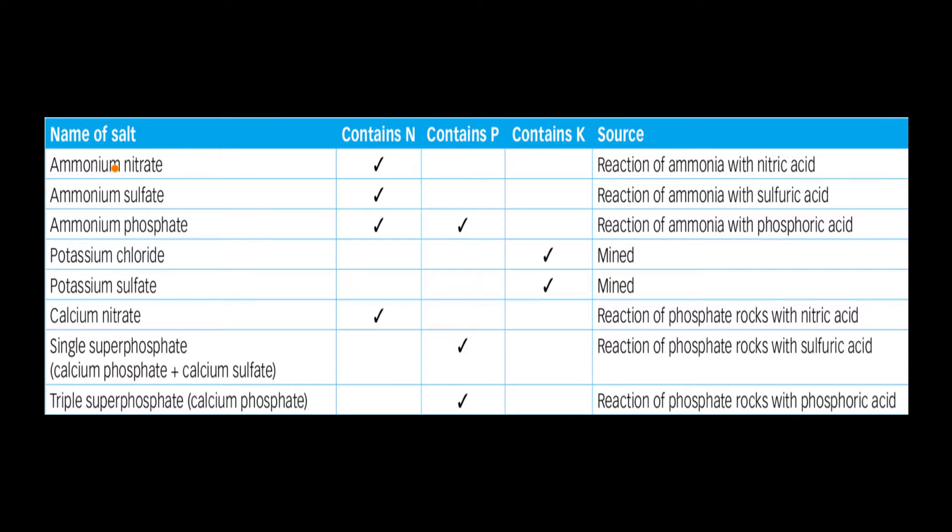So first one, ammonium nitrate. You see that it contains nitrogen. That's produced by the reaction of ammonia with nitric acid. By the way, all of these reactions we're going to go through in the upcoming slides. But I just want you to be aware of all the different salts. So you've got ammonium nitrate, ammonium sulfate, ammonium phosphate.